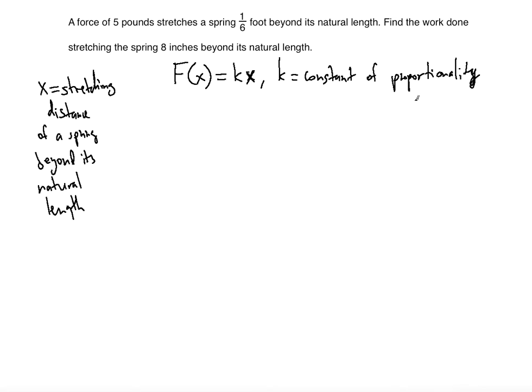So now if k is the constant of proportionality, we first have to find the k. So we are given that the force is 5, and the x will be 1/6. So it's going to be k times 1/6.